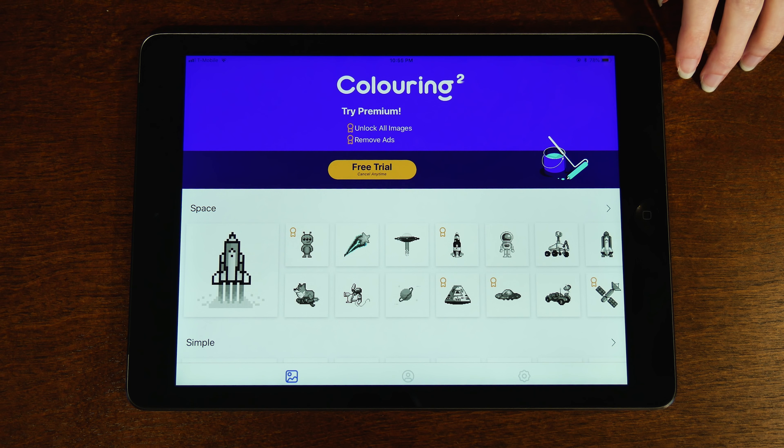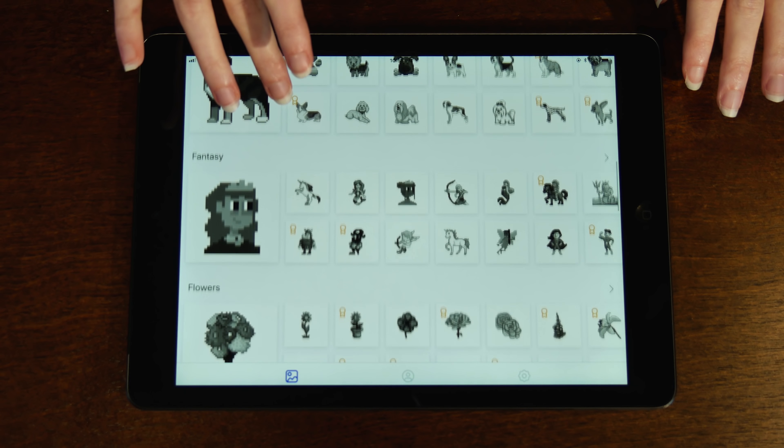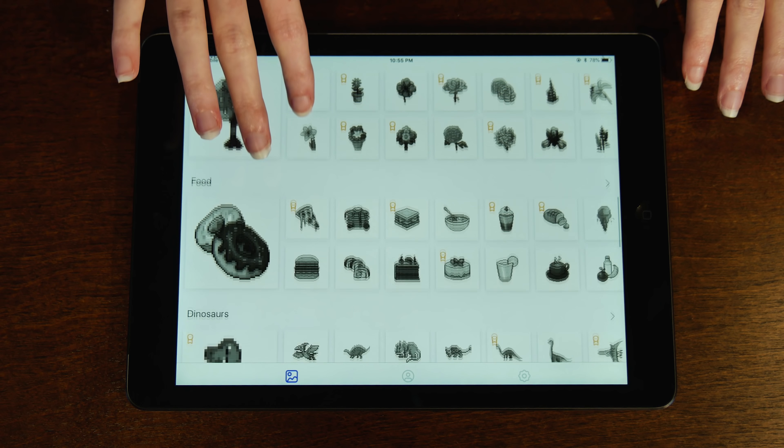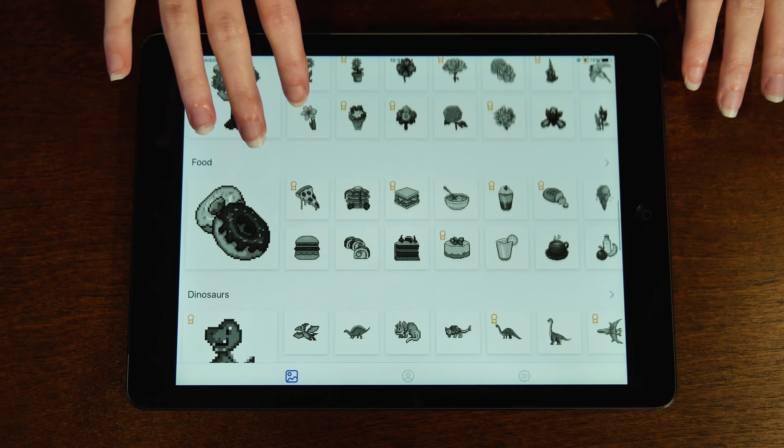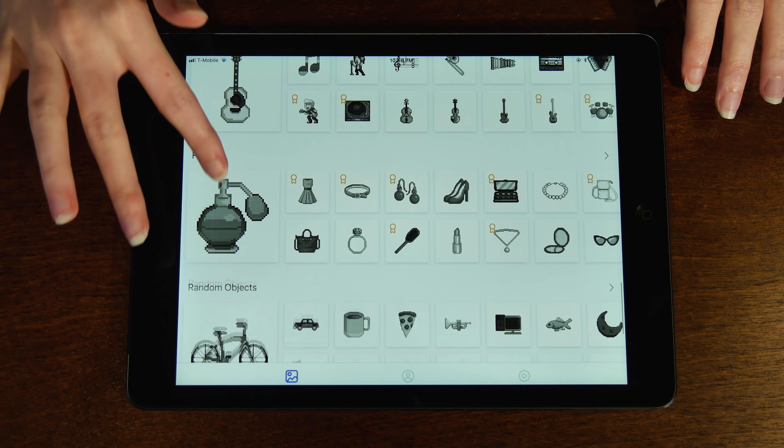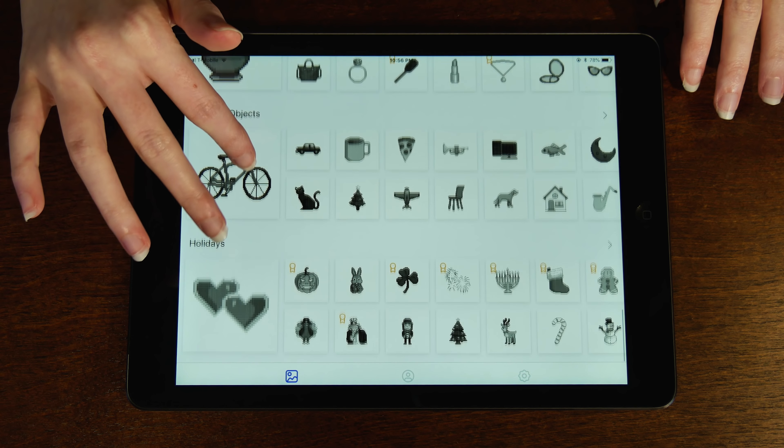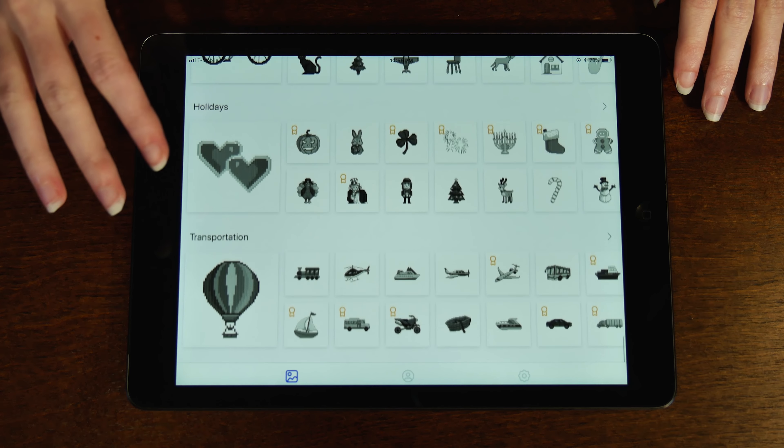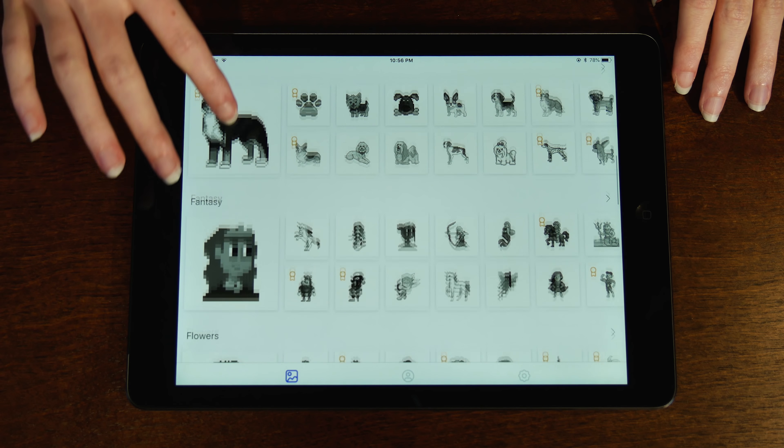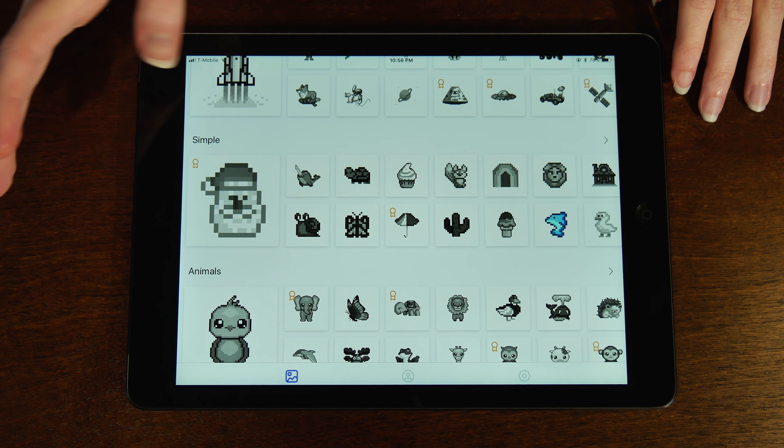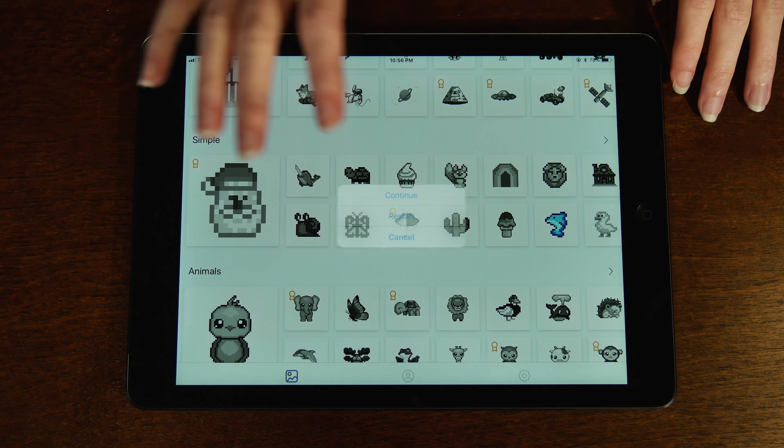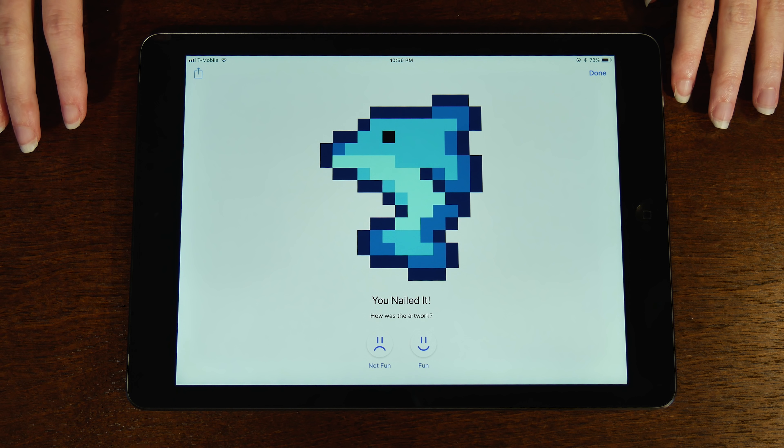This is a color by number app that I've been enjoying lately. So, I'll just show you it. You get a variety of pictures to choose from, and there are categories such as fashion, random objects, holidays, transportation, food, flowers, and animals. As you can see, I just recently completed this one, which is a dolphin.